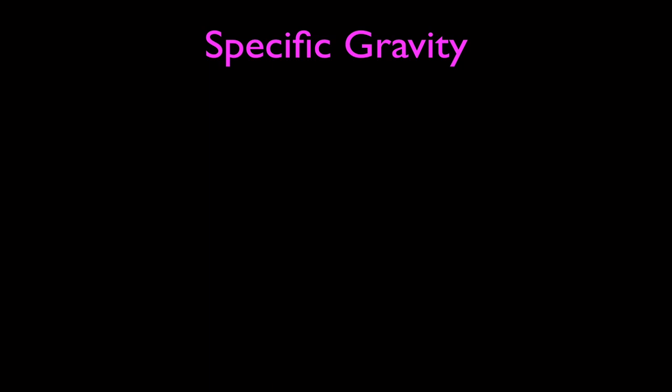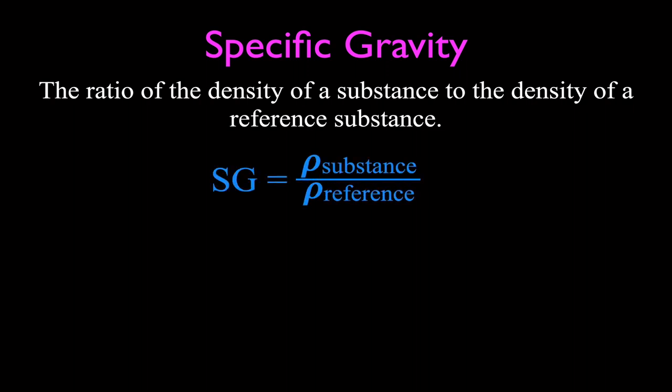Let's get started with density and specific gravity. We're going to start with specific gravity. Specific gravity is simply the ratio of the density of a substance to the density of a reference substance — we divide the density of the substance by the density of the reference substance. This is the equation we use to calculate specific gravity.